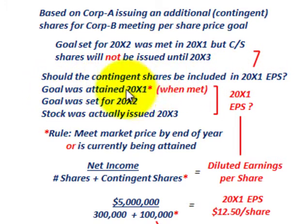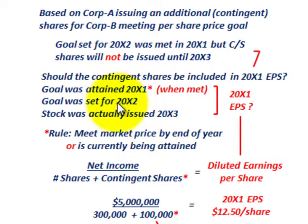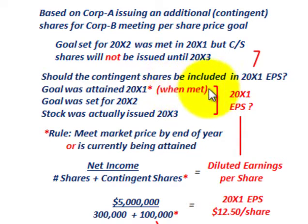The goal was attained in year 20x1 and was met in that year. The goal was set for year 20x2 for the average market price on those common stocks, but the stock will actually be issued in year 20x3. The rule is: if you meet the market price by the end of the year, or it is currently being attained — in this case it was currently being attained in year 20x1 — we would include those contingent shares in the earnings per share for 20x1 for Corporation A.